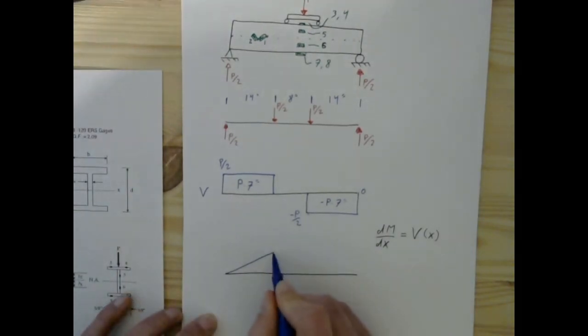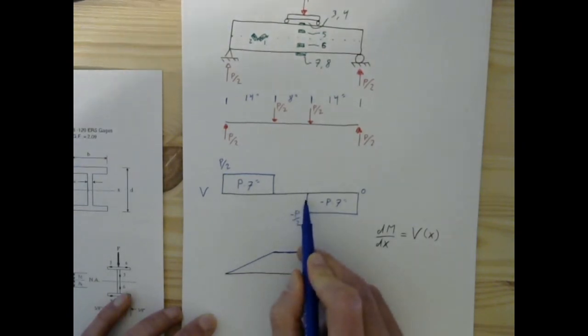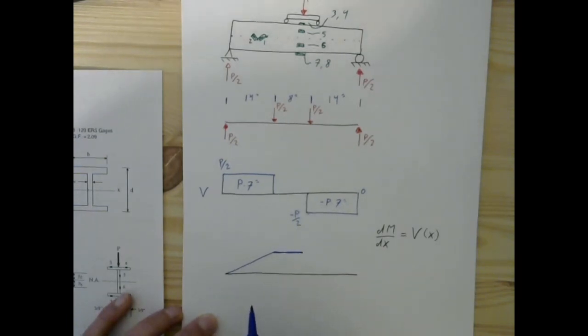Then from there, from the application of the first load to the application of the second load, there is no shear and if there's no shear there's no change in the moment because that is zero.